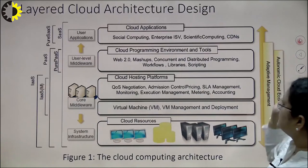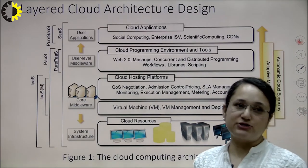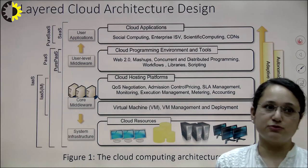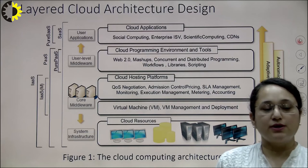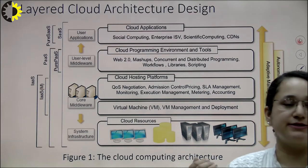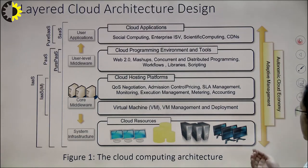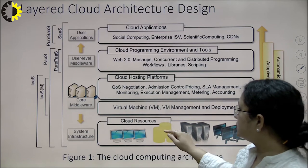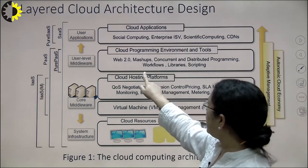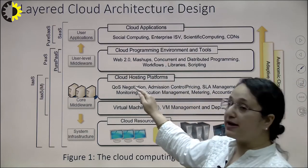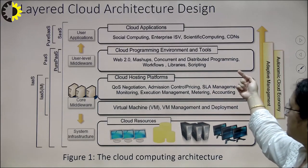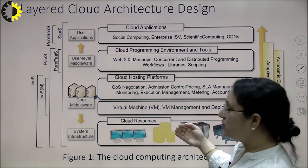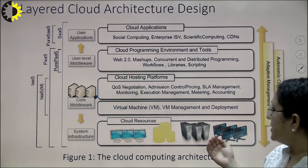The layered cloud architecture design is the basic architecture introduced for cloud computing. In this model, we can view cloud services as a stack of various layers. From the diagram, at the initial level we have cloud resources managed by system infrastructure, above that cloud hosting platforms managed by core middleware, then cloud programming environments and tools, and at the top cloud applications. We will unfold these layers one by one.